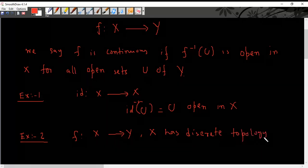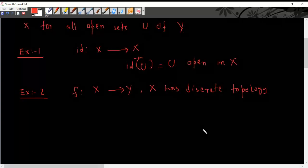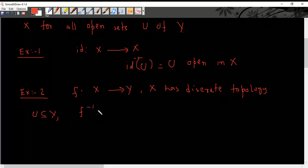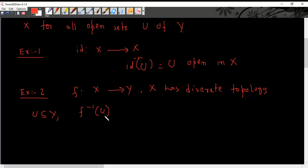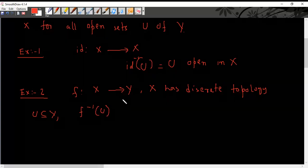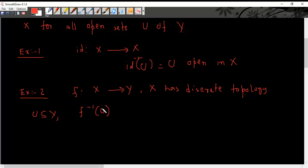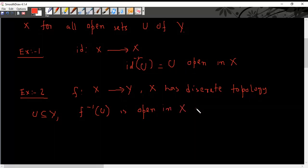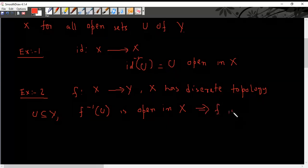What is meant by discrete topology? We have seen in the last video. If you take any open set U subset of Y and you look at f inverse of U, by the definition of discrete topology we know that X has a topology where every possible subset of X is open. So f inverse of U is open in X because X has discrete topology. This implies f is continuous.